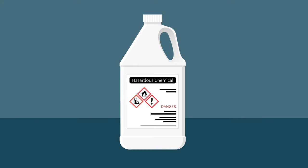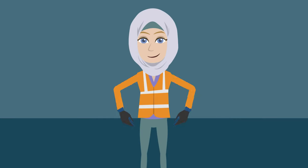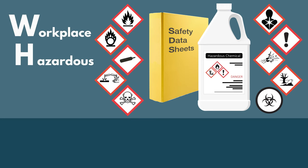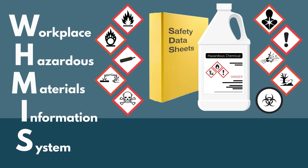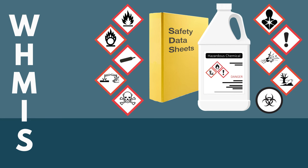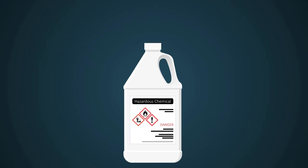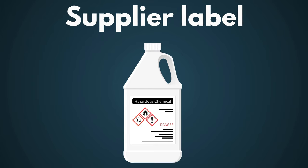There might be products at work that are hazardous. You must be careful when using these products. In Canada, we have a system to protect workers when they use hazardous products. It is called the Workplace Hazardous Materials Information System. For short, we say WHMIS. Every hazardous product that comes into the workplace must have a supplier label.